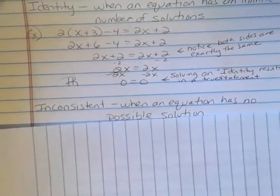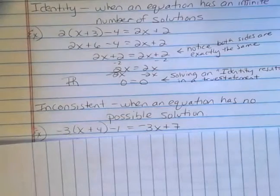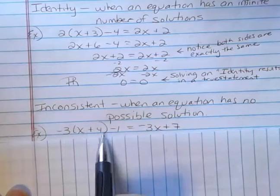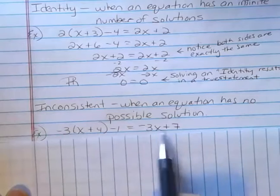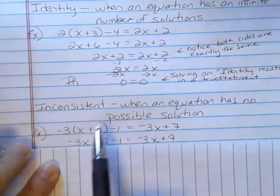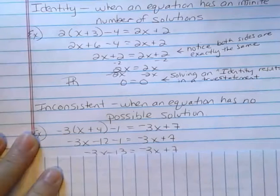Inconsistent is an equation that has no possible solution, at least in the real numbers, is what we're interested in. And so, negative 3 times parentheses x plus 4 minus 1 is equal to negative 3x plus 7. If I distribute on the left, I get negative 3x minus 12 minus 1. And over here, I still have the same binomial.